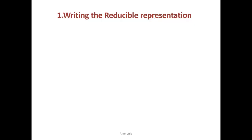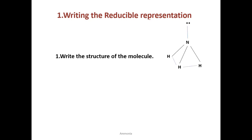First, writing the reducible representation. We should write the structure of the ammonia molecule. Ammonia molecule is trigonal pyramidal in shape. We are showing the lone pair — that is, the non-bonded pair of electrons — in this structure. Leaving the lone pair, the structure is trigonal pyramidal. Nitrogen is at the apex of the pyramid and the three hydrogen atoms are at the three corners of the triangular base.